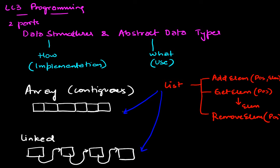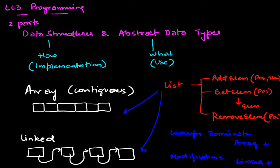The choice of which implementation to use depends on what kind of accesses you perform. If lookups dominate your use, then an array implementation is preferred because it makes lookups faster. Whereas if you do a lot of modifications — adds and deletes — then a linked structure is better. Often when people use the word 'data structure,' they're really talking about an abstract data type.